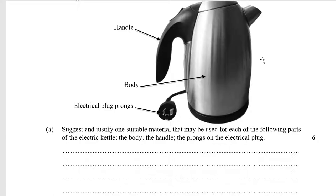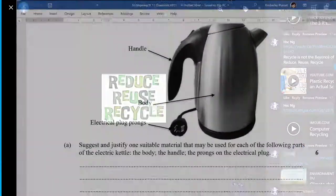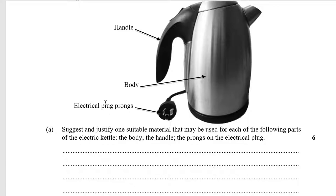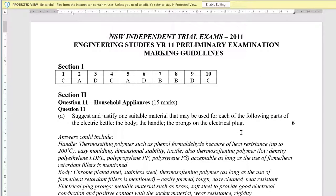The handle is made out of a polymer — probably PVC or ABS. We've already opened the answers — let's see. Phenol formaldehyde — a thermosetting polymer — because I don't want it to melt. There are polymers that can resist the temperature of boiling water, which is only 100 degrees Celsius; they said up to 200 degrees for phenol formaldehyde. They also accept LDPE, polystyrene, and polypropylene.